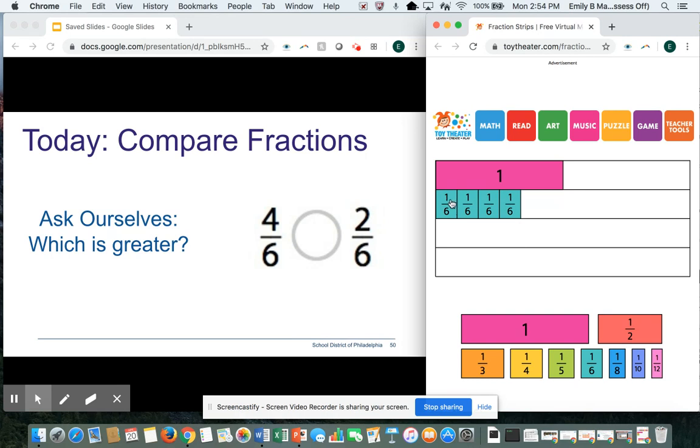I represented the fraction 1, 2, 3, 4 sixths. Now, I'm going to represent 2 sixths in the row below. 1, 2, 2 sixths.